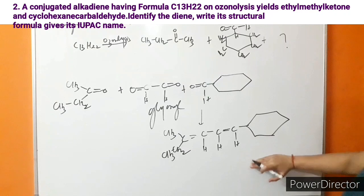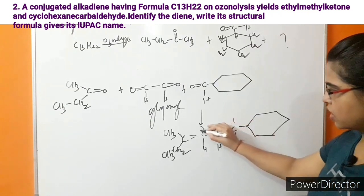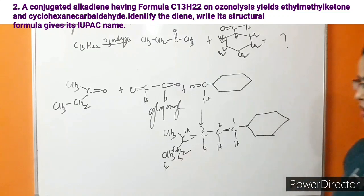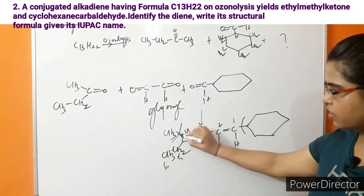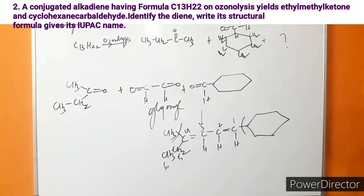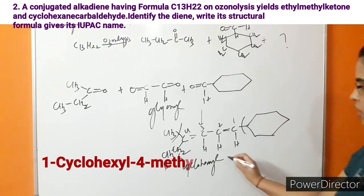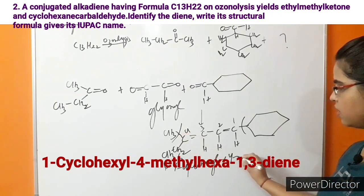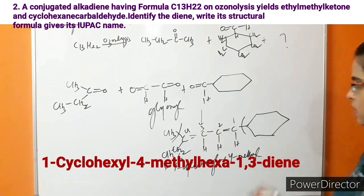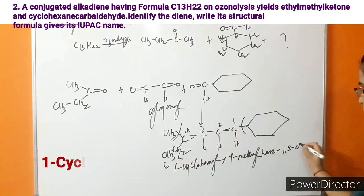This compound has formula C13H22, confirming it is correct. Numbering the chain: the longest chain has 6 carbons (hexane), with a cyclohexyl substituent at position 1 and a methyl substituent at position 4, and double bonds at positions 1 and 3. The IUPAC name is 1-cyclohexyl-4-methylhexa-1,3-diene.